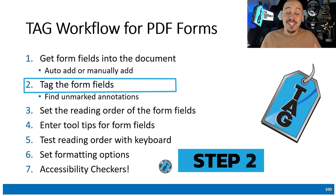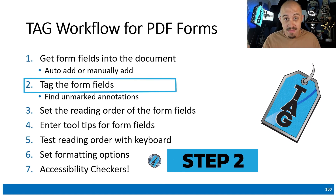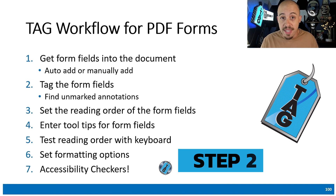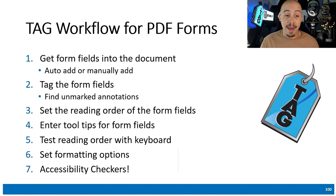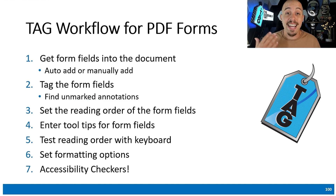Next, we need to actually tag the form fields. Once you get them in the document, you need to tag them, and the way you do this is by using the find unmarked annotation option from the options panel within the tags window.